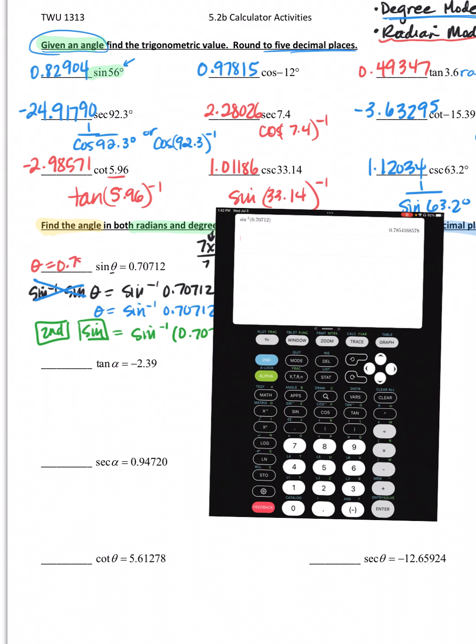Let me show you on the calculator. If I'm doing the inverse sine, I would hit second and sine - there's that inverse notation I told you about. 0.70712. There it is. This is in what mode? Well, this is the radian version of it, so I would write this down as the radian.